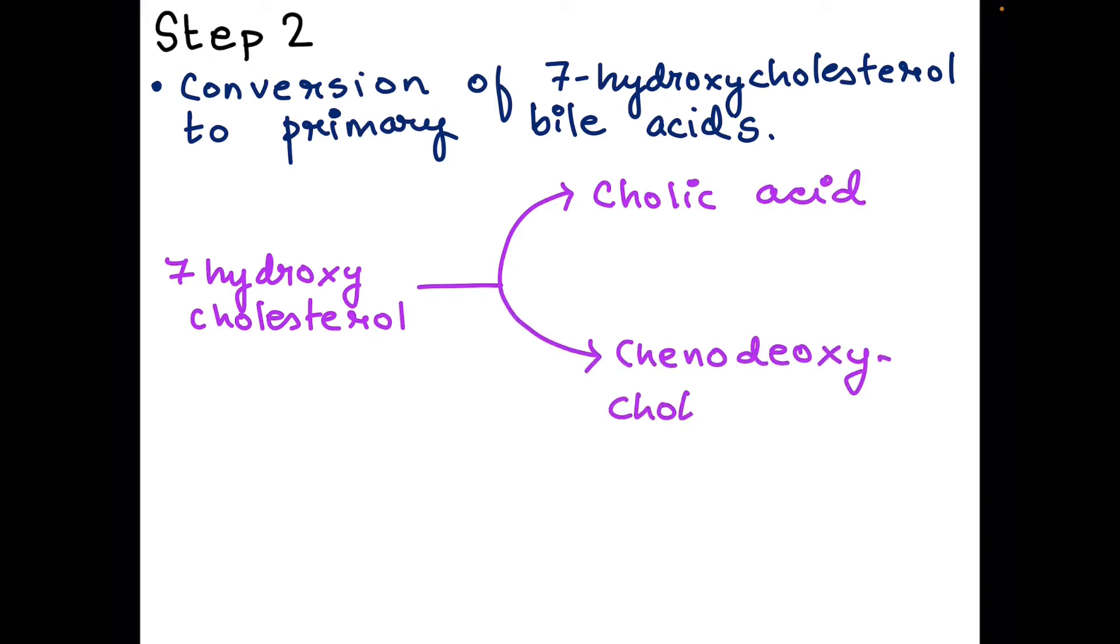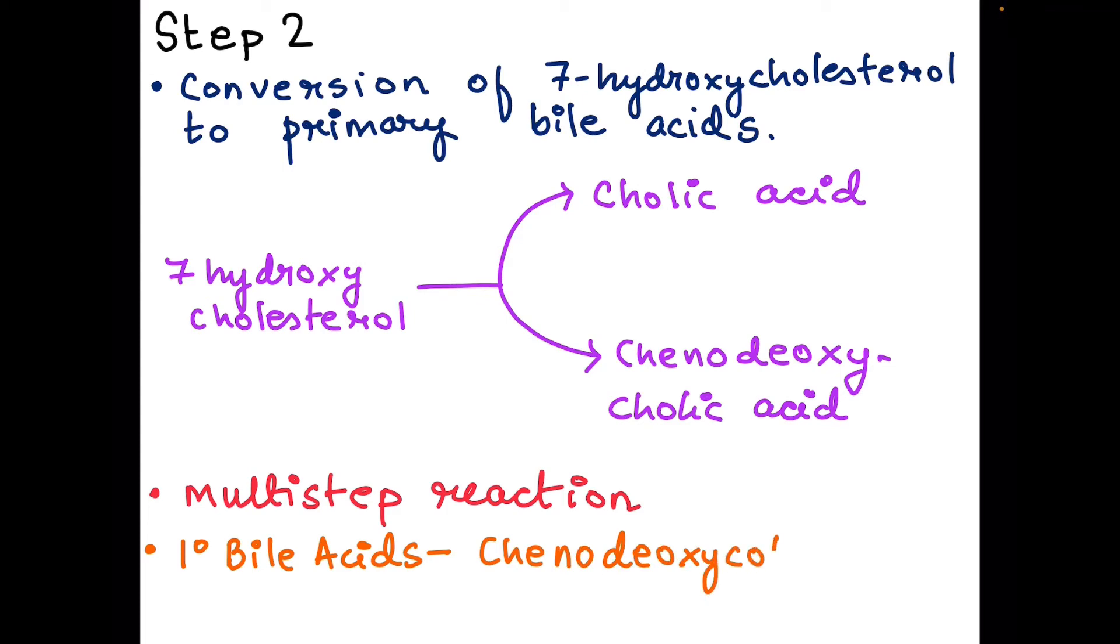This is a multi-step reaction, and cholic acid and chenodeoxycholic acid are the primary bile acids. You have to remember that one molecule of oxygen and NADPH is required in this step for both conversions, and one molecule of propionyl-CoA is released.